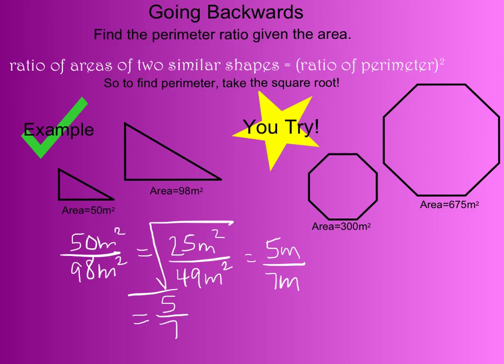We went through it: we took our areas, set them up in a ratio with smaller over larger, simplified by dividing by 2, then took the square root to get our answer of 5 over 7. Now you try and bring it to class.